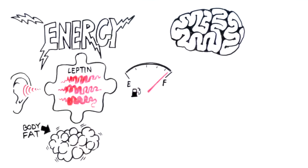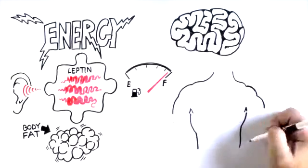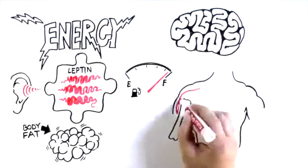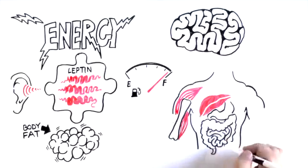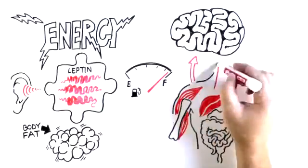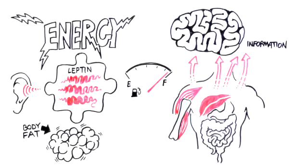But leptin is just one piece of the puzzle. You've got a whole bunch of other hormonal signals and sensors that are involved too. Your bones, muscles, pancreas, liver, GI tract and sensory organs, they all play a role, communicating with your brain to give it the information it needs to do its job.